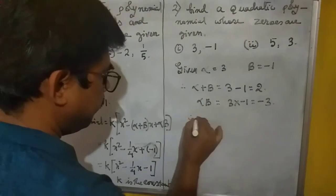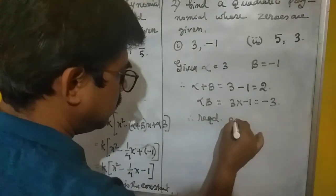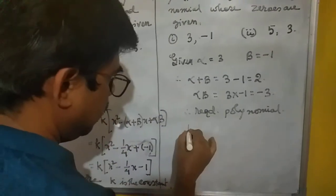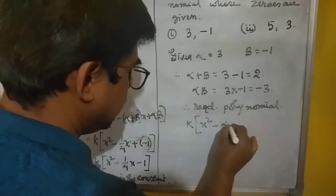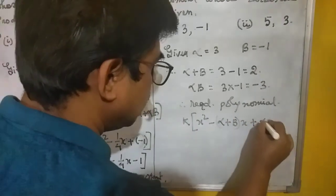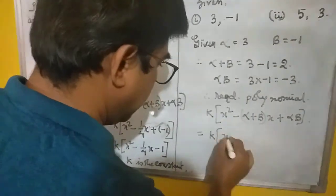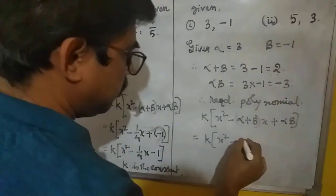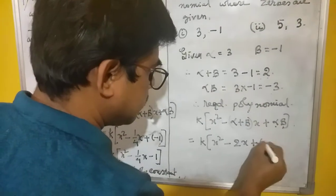And therefore, required polynomial will be k, then x square minus alpha plus beta x plus alpha into beta. Here k x square minus alpha plus beta, it will be 2. With 2x plus alpha into beta, we get minus 3.